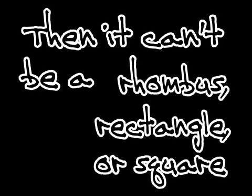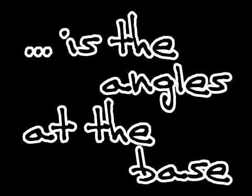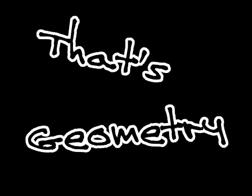If parallel sides are only one pair, then it can't be a rhombus, rectangle, or square. It's a trapezoid with legs and faces times two. If it's isosceles, we know two facts are true: number one is the angles at the base — they got to be equal, that's a fact you can't erase. Number two, two sides are equal — that's geometry.